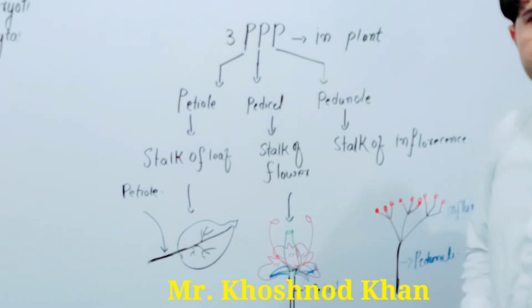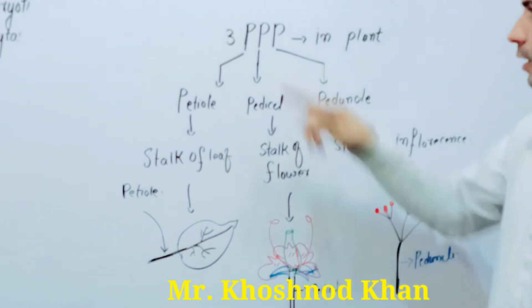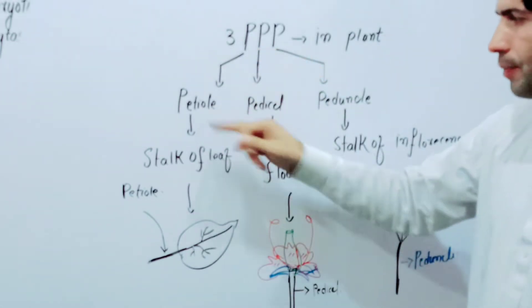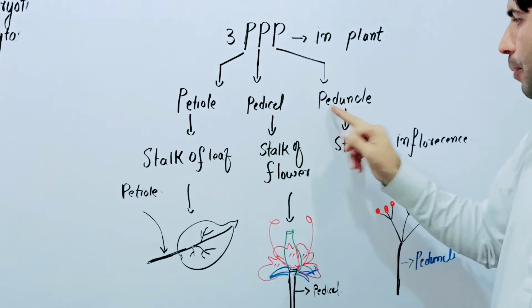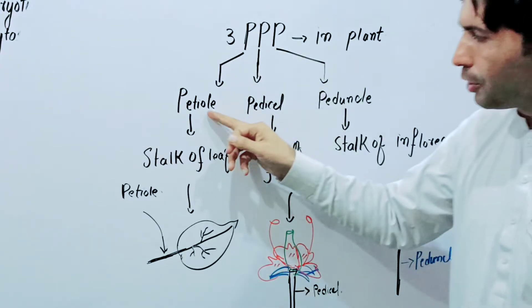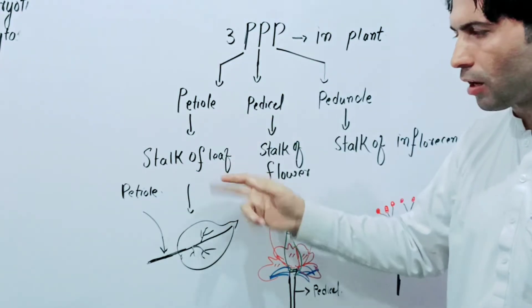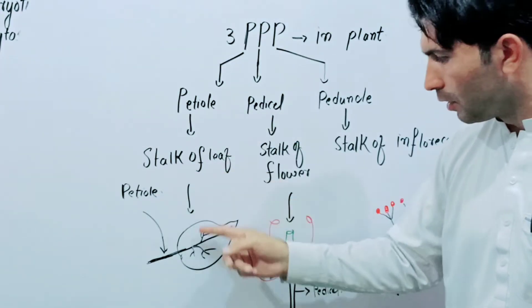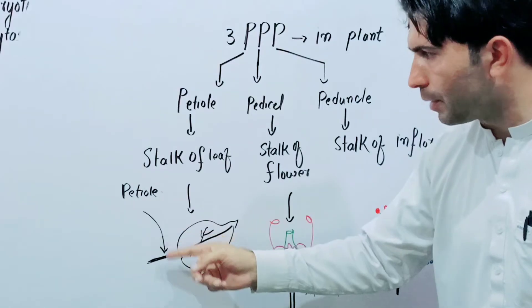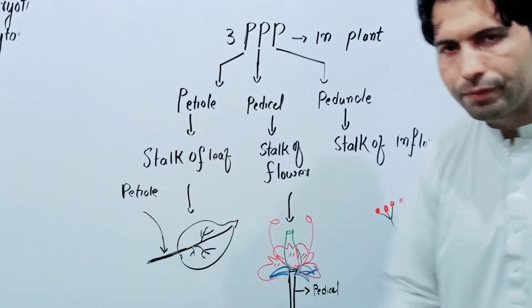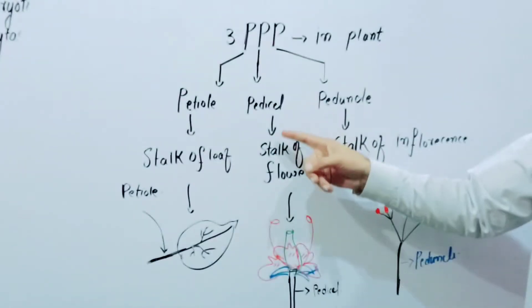Let's remember 3 PPP in plants. Petiole is the stalk of a leaf. This is the leaf, and this is the stalk of the leaf — it's called petiole.